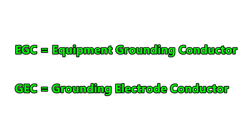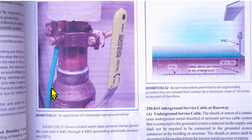What is the difference between an EGC and a GEC? An EGC is our abbreviation for equipment grounding conductor, and GEC is our abbreviation for grounding electrode conductor. Notice both of them include the word grounding and the word conductor. Let's first look at grounding electrode conductor. See this green wire right here? That is a grounding electrode conductor, or GEC.